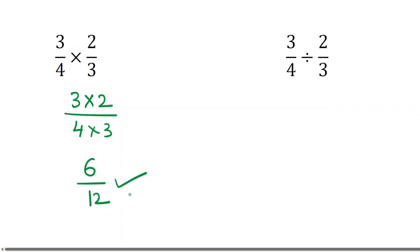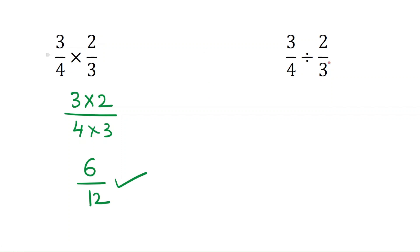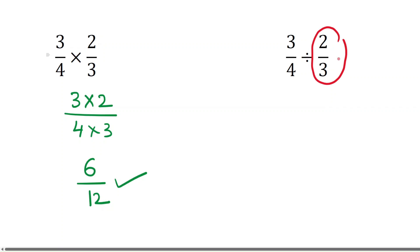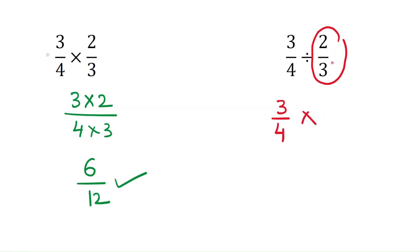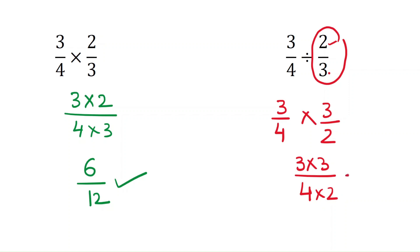For division, you take the reciprocal of the second fraction. So 3/4 ÷ 2/3 becomes 3/4 × 3/2, since the reciprocal of 2/3 is 3/2. Then multiply numerator by numerator and denominator by denominator: 3×3 = 9 over 4×2 = 8, giving the answer 9/8.